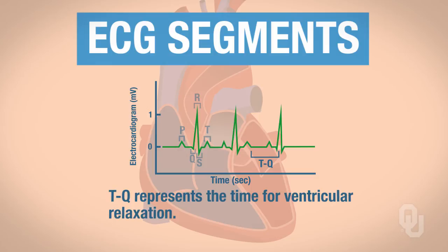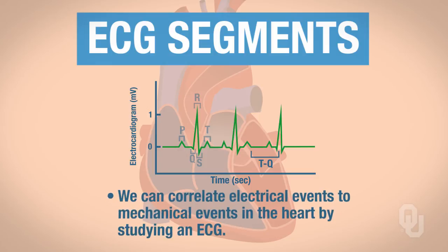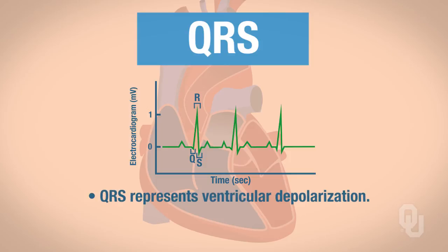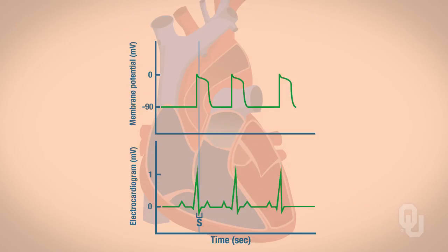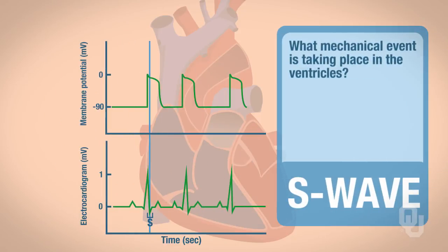We have discussed the ECG waves and segments, but there's more. We can correlate electrical events to mechanical events in the heart by studying an ECG. Let's look at QRS — it represents ventricular depolarization. Look at the end of the S in the ECG and correlate that to the cardiac action potential graph above. At the end of the S, the mechanical event happening with the ventricles is contraction. Because QRS is ventricular depolarization, that means the ventricles can contract. And since electrical events occur before mechanical events, we can infer ventricular contraction.